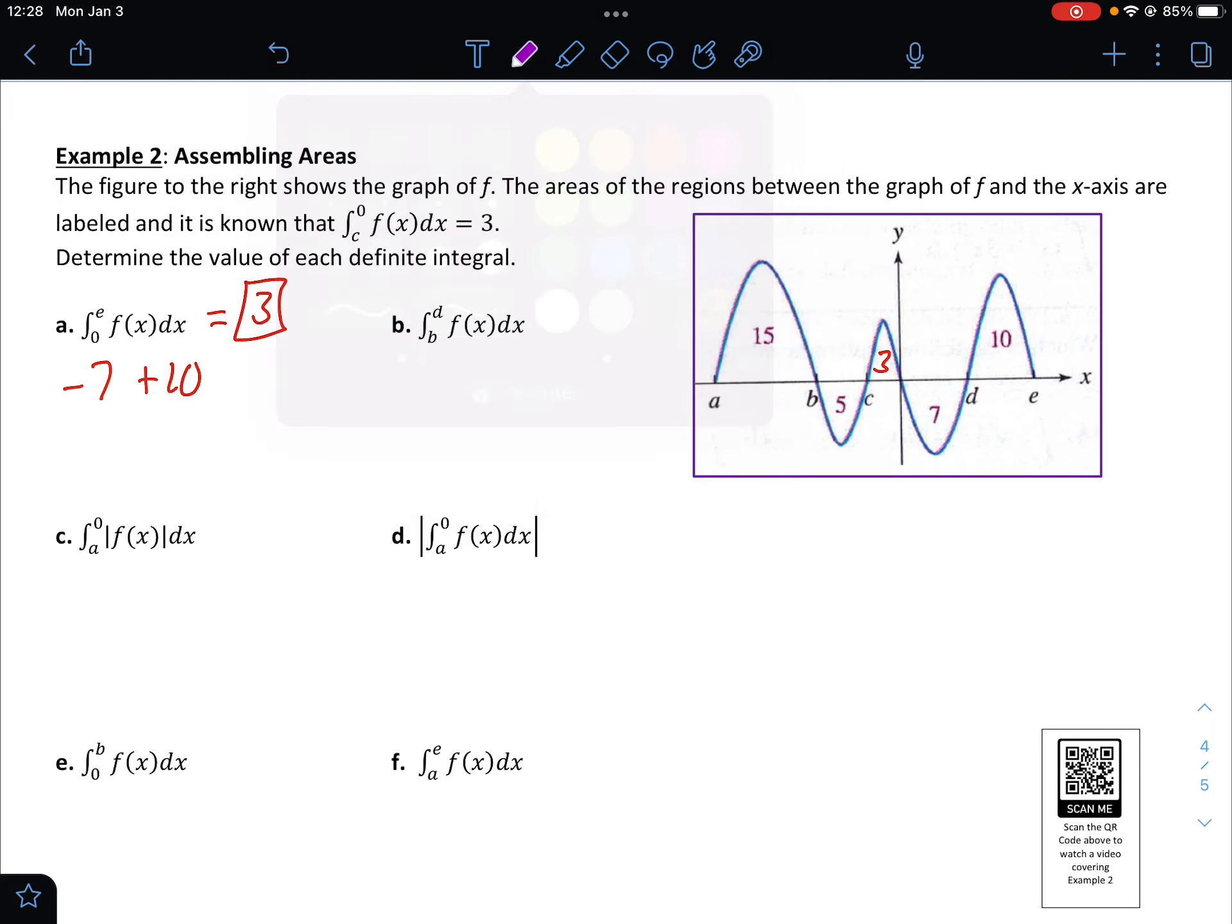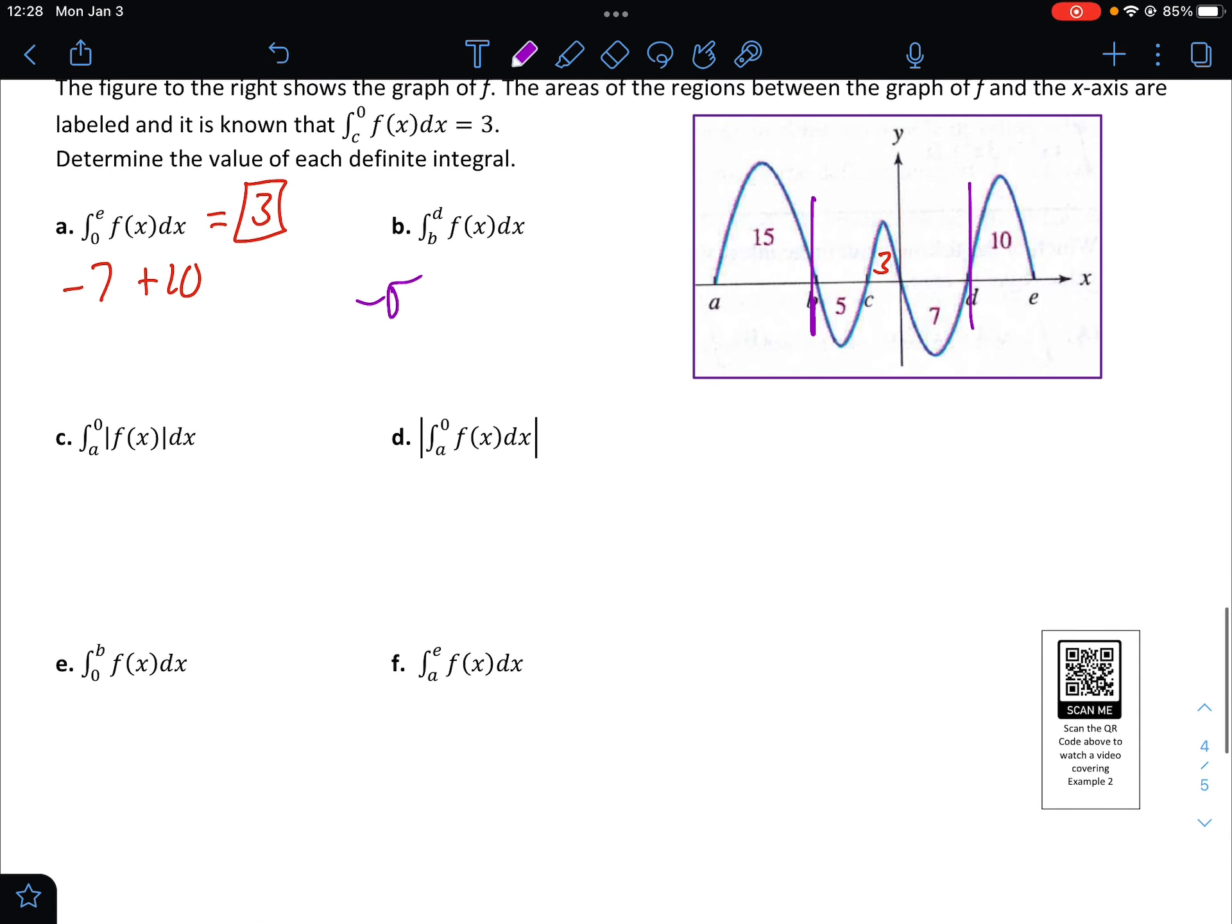Second one, from b to d, and that's going to be negative 5 plus 3 minus 7. And that would be negative 9.